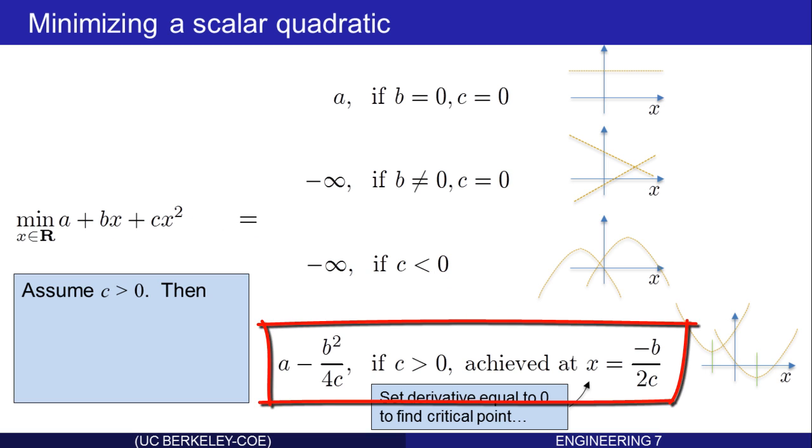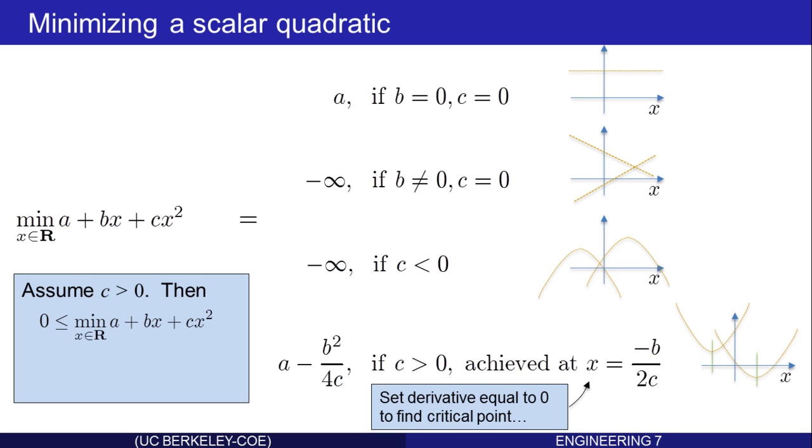I can summarize this in a little theorem. Let's take the case where c is greater than zero, then the minimum is greater than or equal to zero, if and only if 4ac is greater than or equal to b squared. All I've done is cast this minimum as greater than or equal to zero, and then move the b squared to the other side, c is positive, move the 4c over, and I get 4ac greater than or equal to b squared.